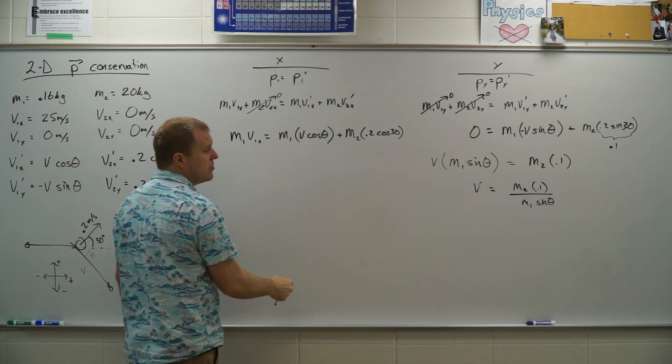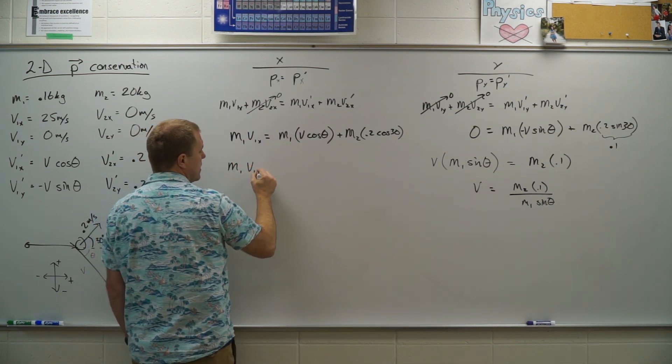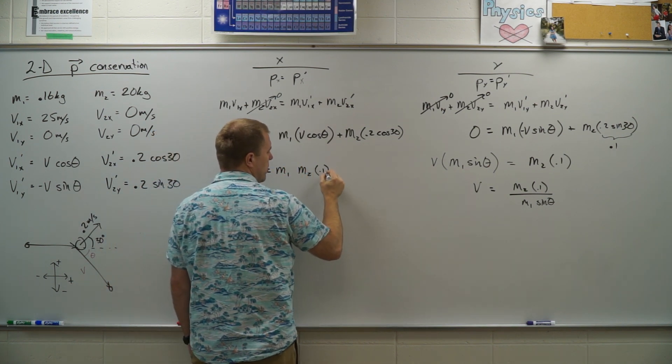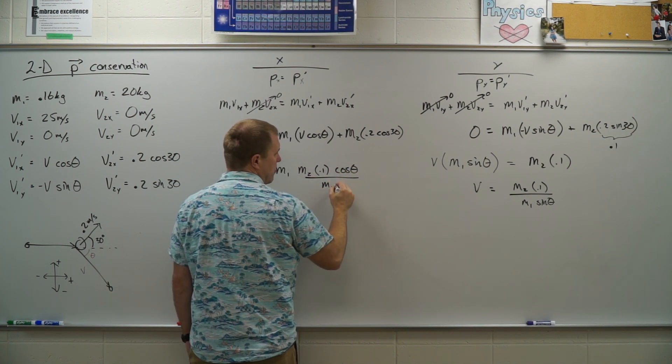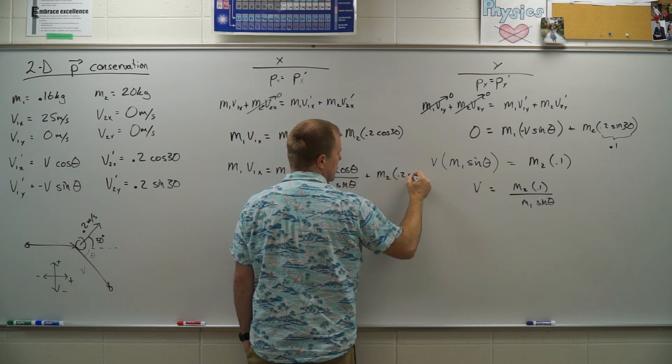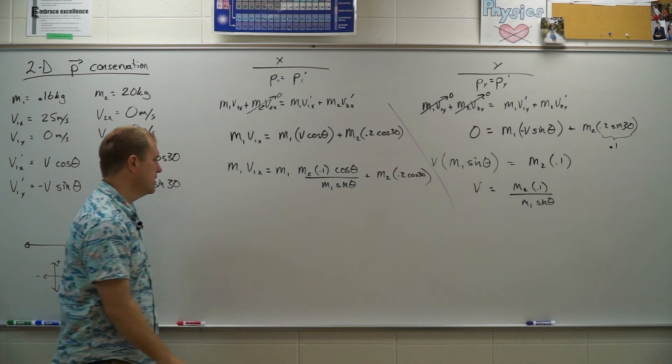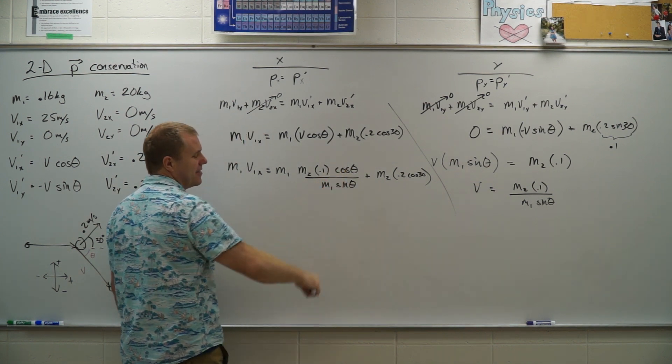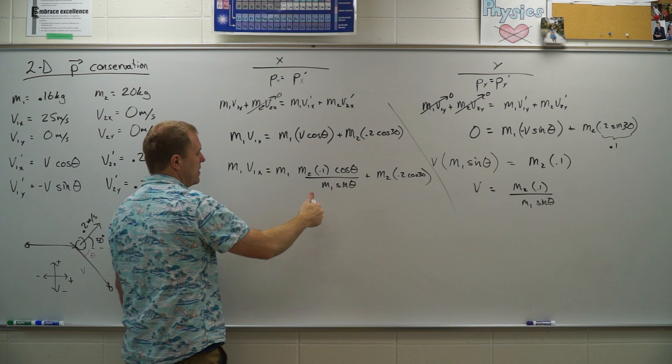Go ahead and substitute that in over here for V. So now I have M1 V1X equals M1 times M2 times 0.1 times the cosine of theta all divided by M1 sine theta plus M2 times 0.2 cosine 30. So that looks ugly. Nice thing for me though, I have sine, cosine here. It's cosine over sine, so it's cotangent or just divide the tangent out.